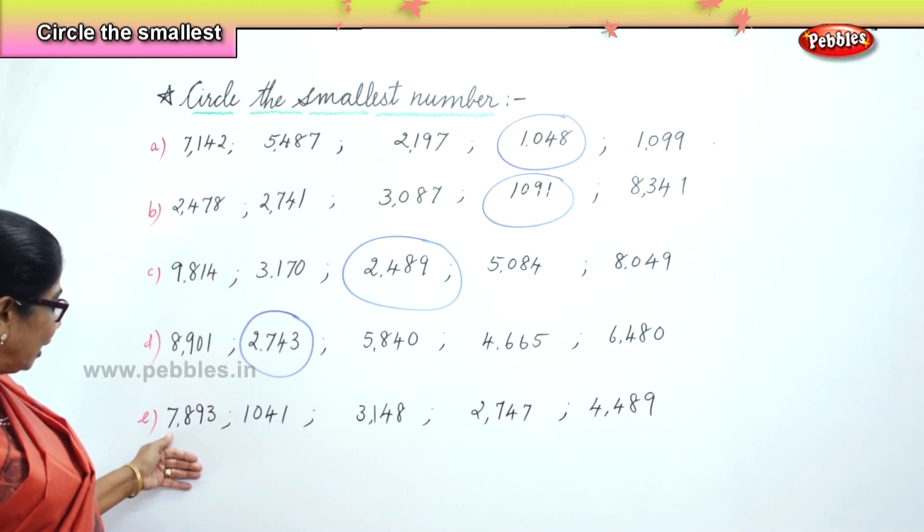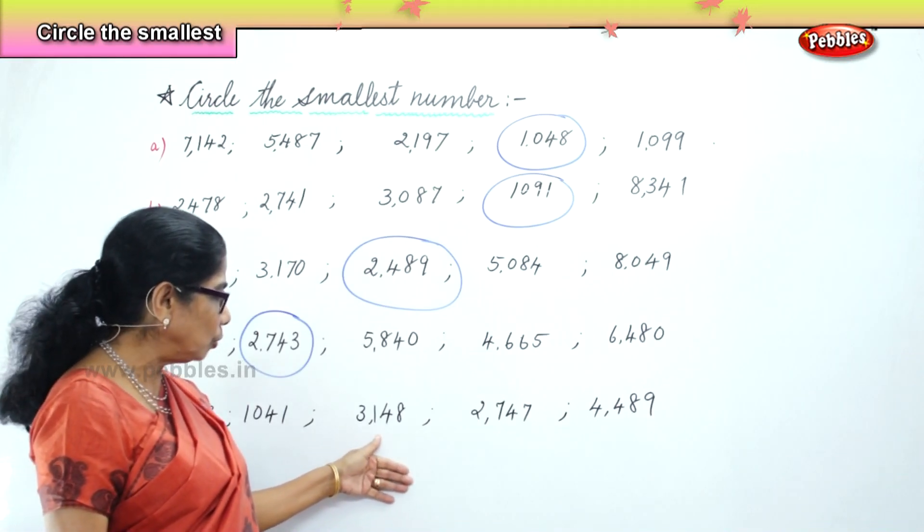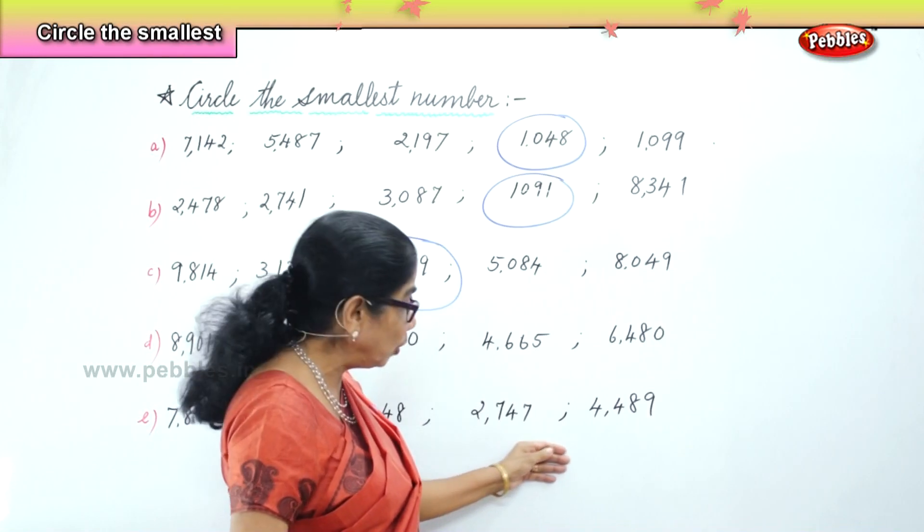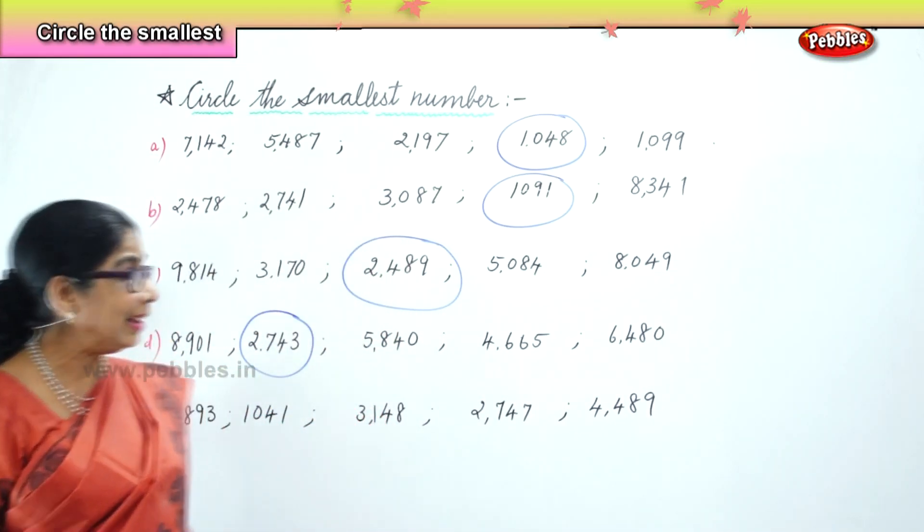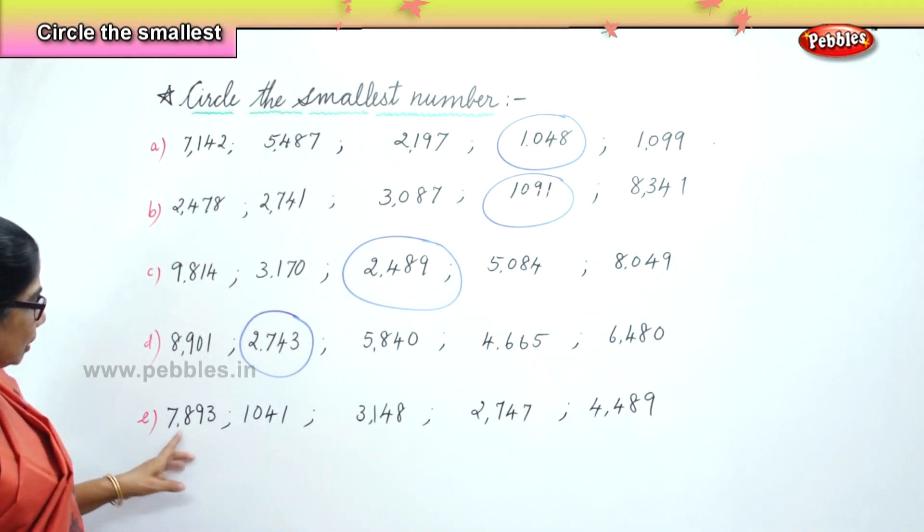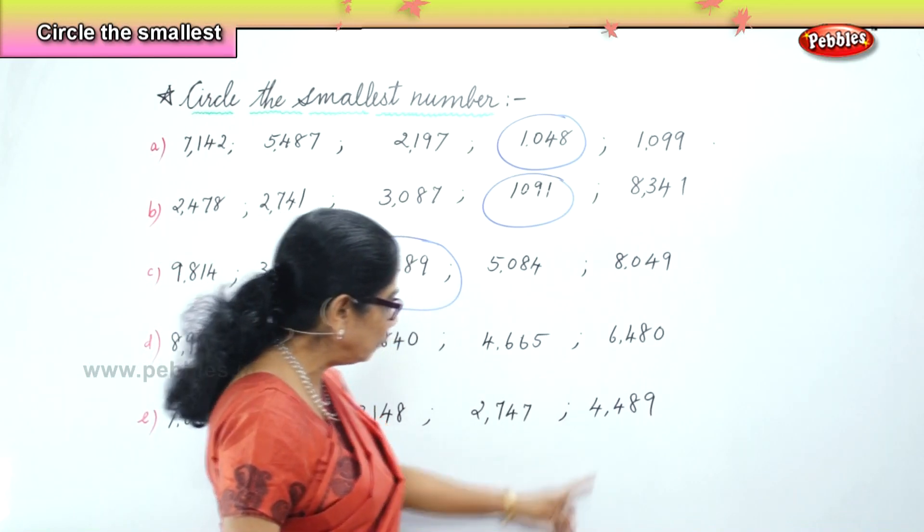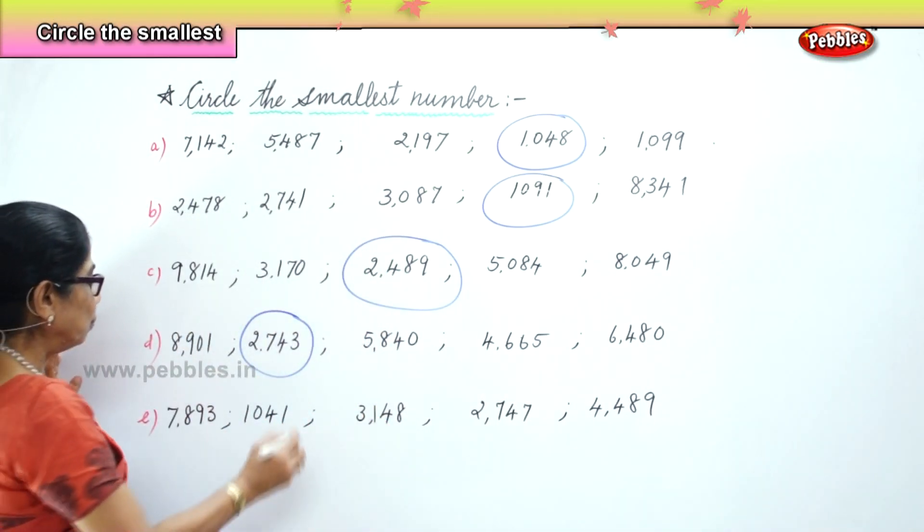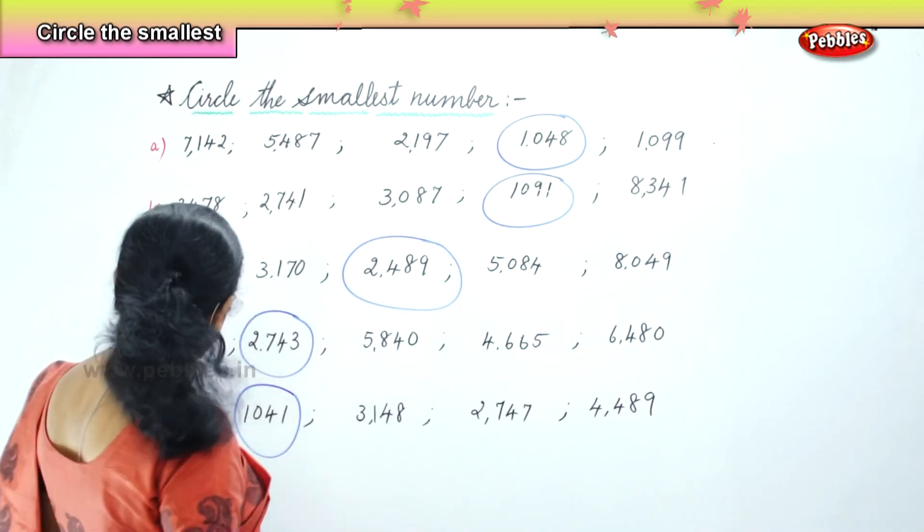And then the next we have 7,893, 1,041, 3,148, 2,747, 4,489. So you have 7,000, 1,000, 3,000, 2,000, and 4,000. So of the lot, 1,041 is the smallest of the five numbers given to us.